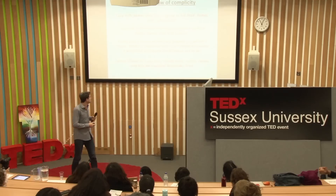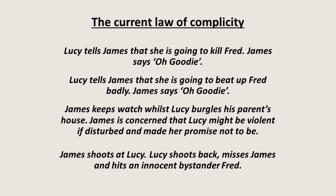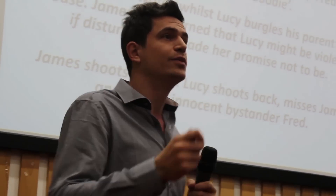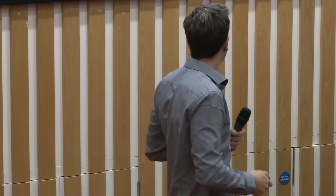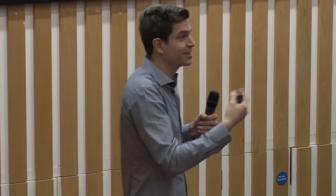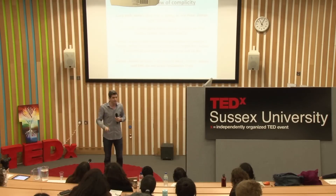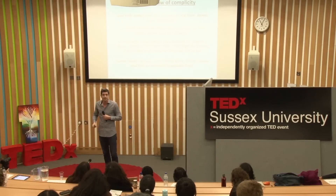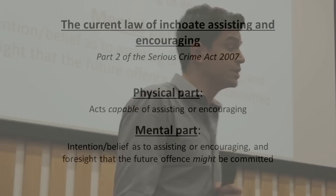A nice example from the Supreme Court case of Gnango: James shoots at Lucy, Lucy shoots back, misses James, and hits an innocent bystander, Fred. The potential liability is for the murder of Fred. Does James do something that assists and encourages? Yes — by shooting at the other person you're encouraging them to shoot back. Does he foresee a risk that murder might be committed? Yes — the murder of him. But because she misses and hits Fred, Lucy is liable for Fred's murder, and importantly James is now also liable for murder — essentially for assisting and encouraging the attempted murder of himself.